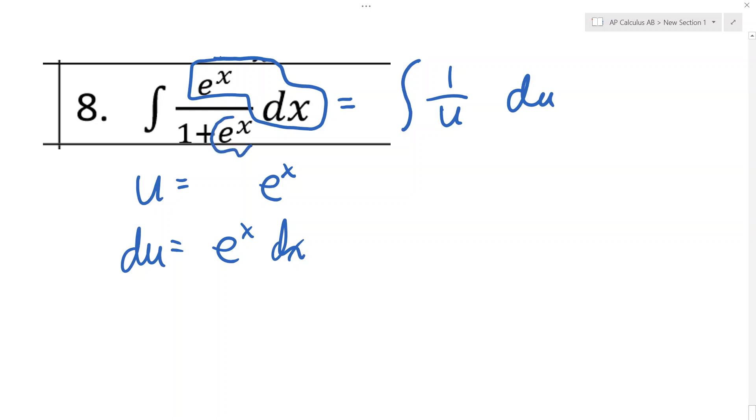Anytime you want to let something be u, if it's attached by addition to a constant, just throw the constant in there with it. Because when you derive it, it just goes away. And that way, the substitution is a little bit easier.